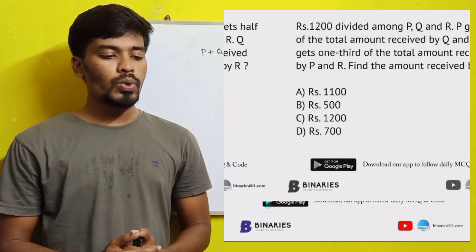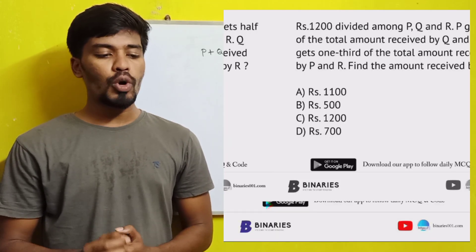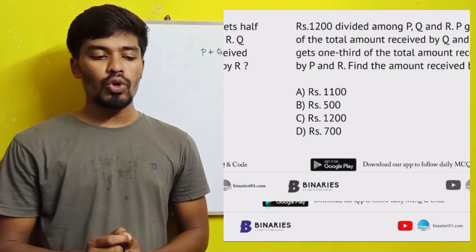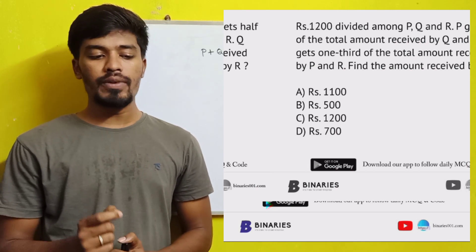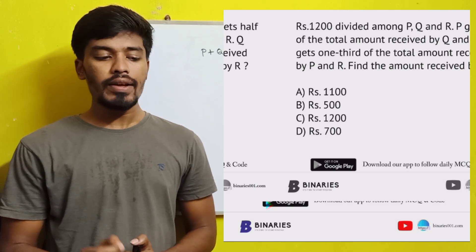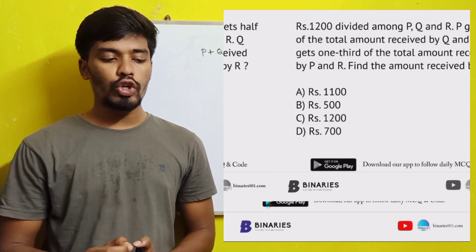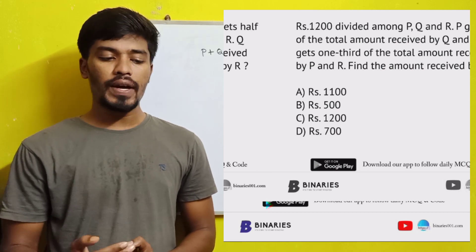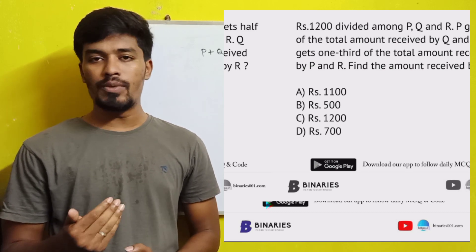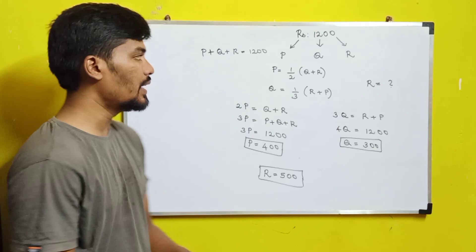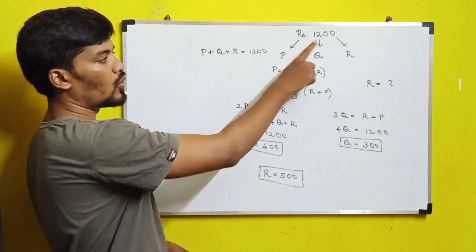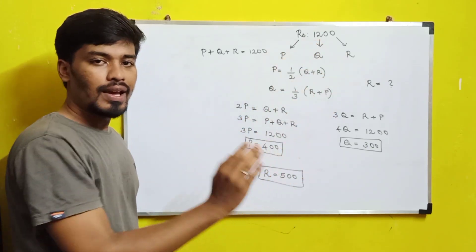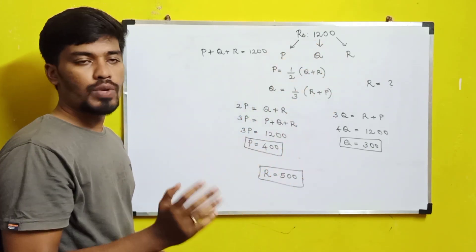The first question: Rupees 1200 is divided among P, Q, and R. P gets half of the total amount received by Q and R. Q gets one third of the total amount received by P and R. Find the amount received by R.